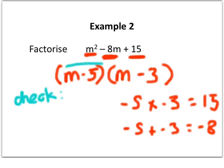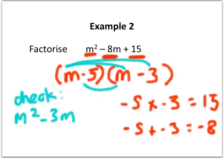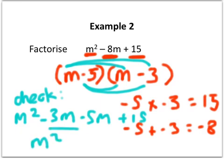In terms of checking, m times m is m squared, m times minus 3 is minus 3m, minus 5 times m is minus 5m, and minus 5 times minus 3 is plus 15. Tidy that up: m squared minus 3m minus 5m is minus 8m, plus 15. So back to where we started, we know we're correct.